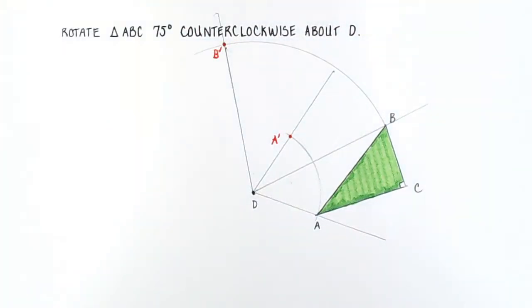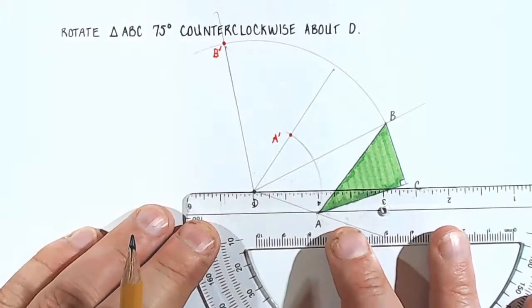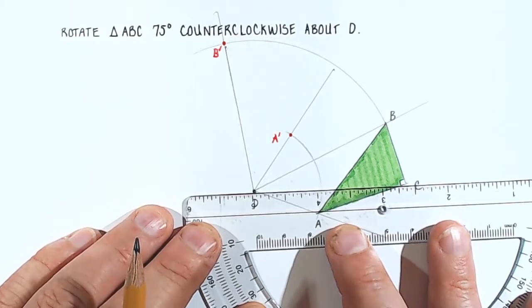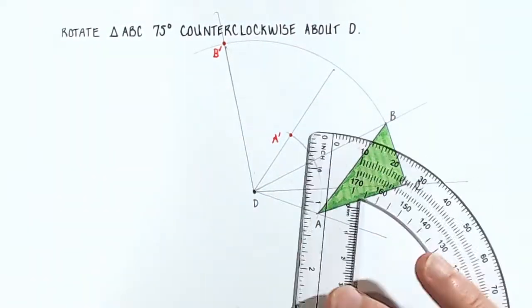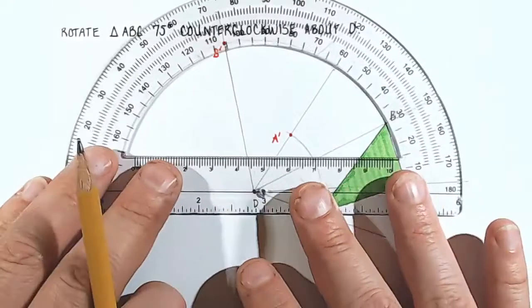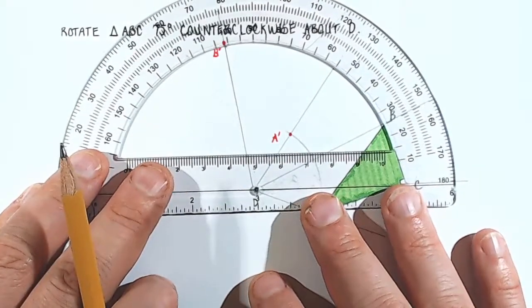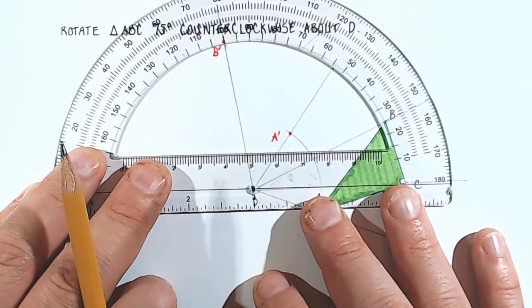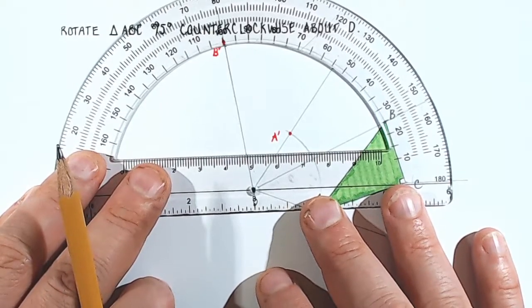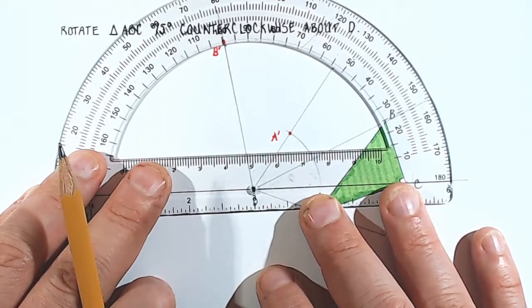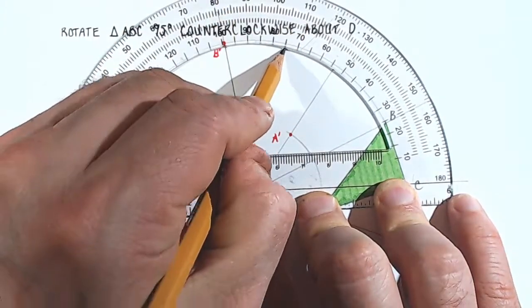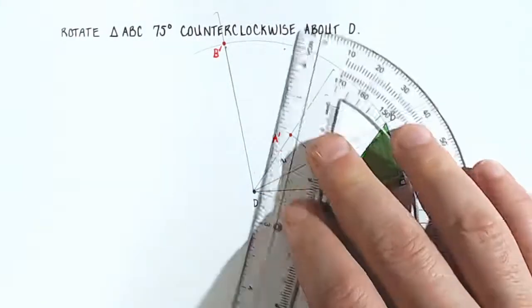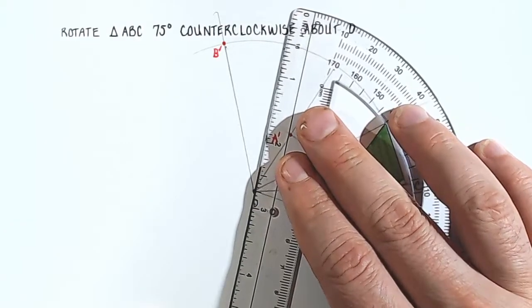Finally, point C. I'm going to connect D to C, just like that. And now I'm going to measure off 75 degrees. There's 75 right there. We'll connect those points.